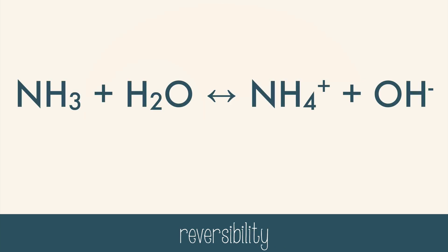When you look at an acid-base reaction, you'll notice that a double arrow is often used. This implies that the reaction is actually reversible — it can occur in both directions. In this reaction, the ammonia is the base because it's the hydrogen acceptor. By default, the water is acting as an acid because it will be the hydrogen donor.